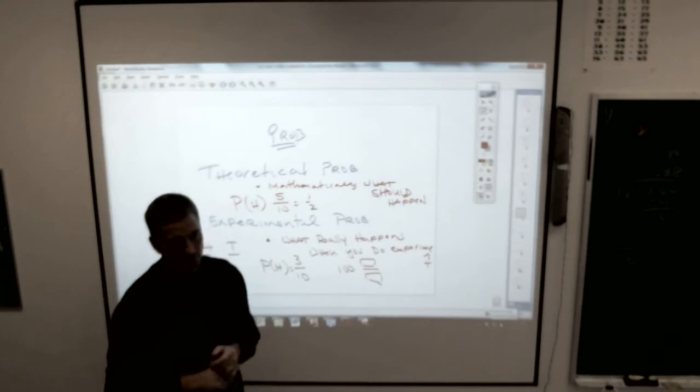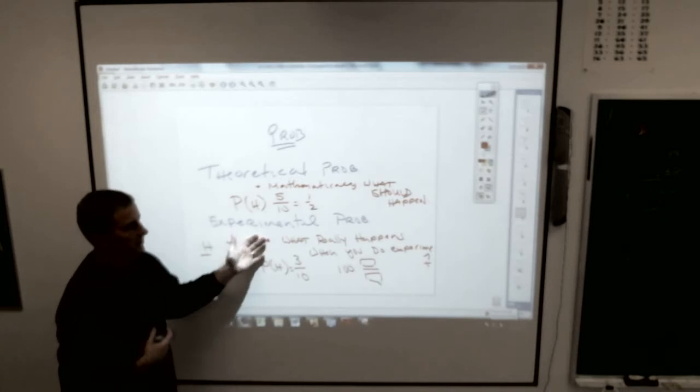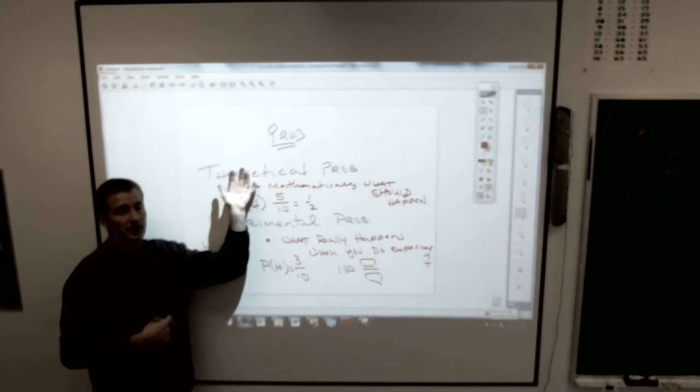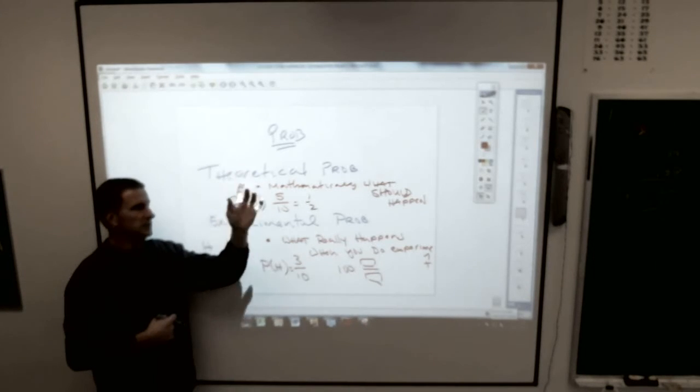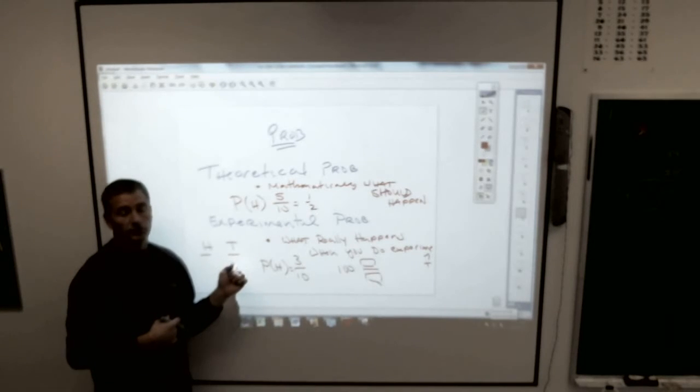I should look and see if there's a website that will do the probability. Given enough time, experimental probability will catch up to theoretical probability if it doesn't match up right away. But this is what's supposed to happen. This is what does happen. Eventually, they will meet or get awful close.